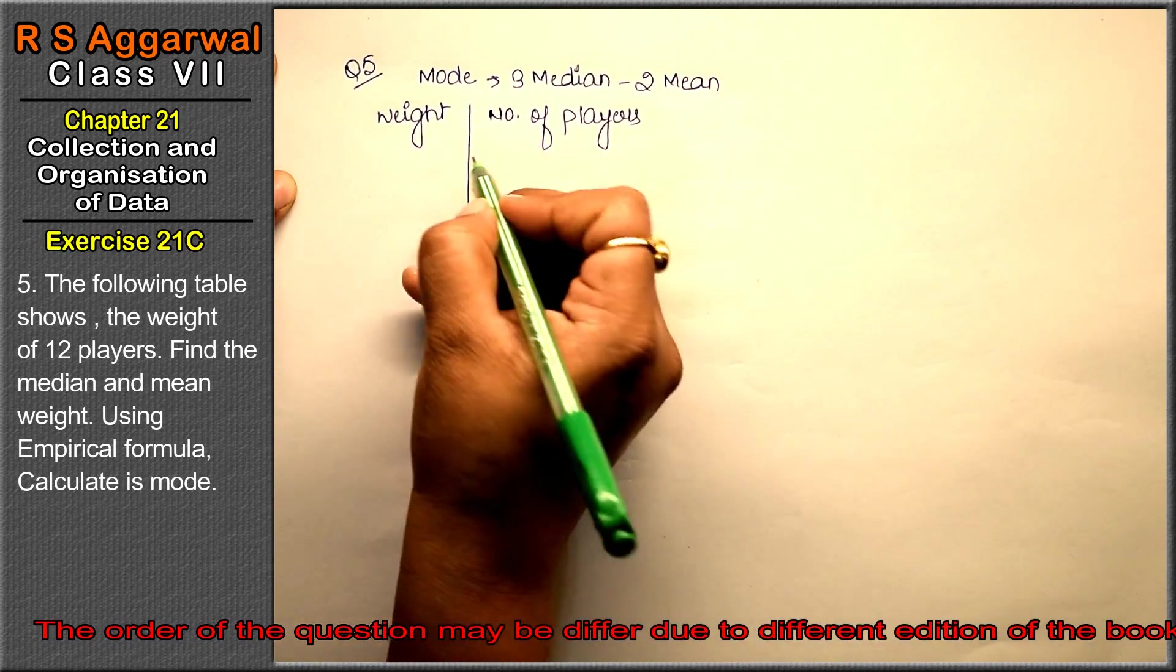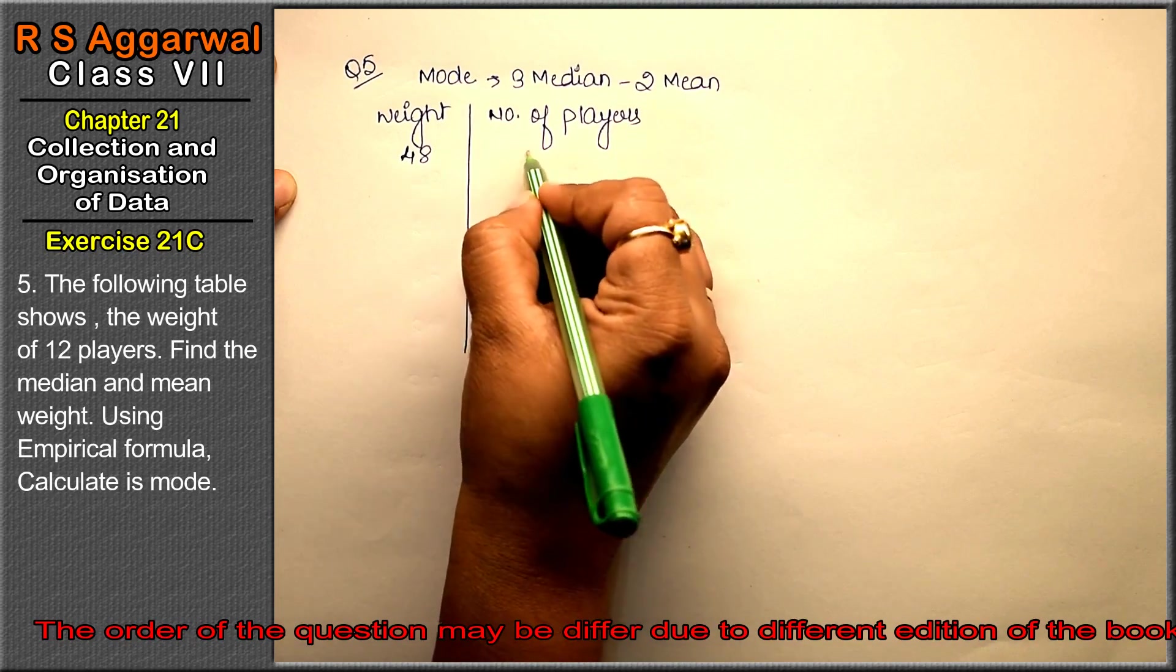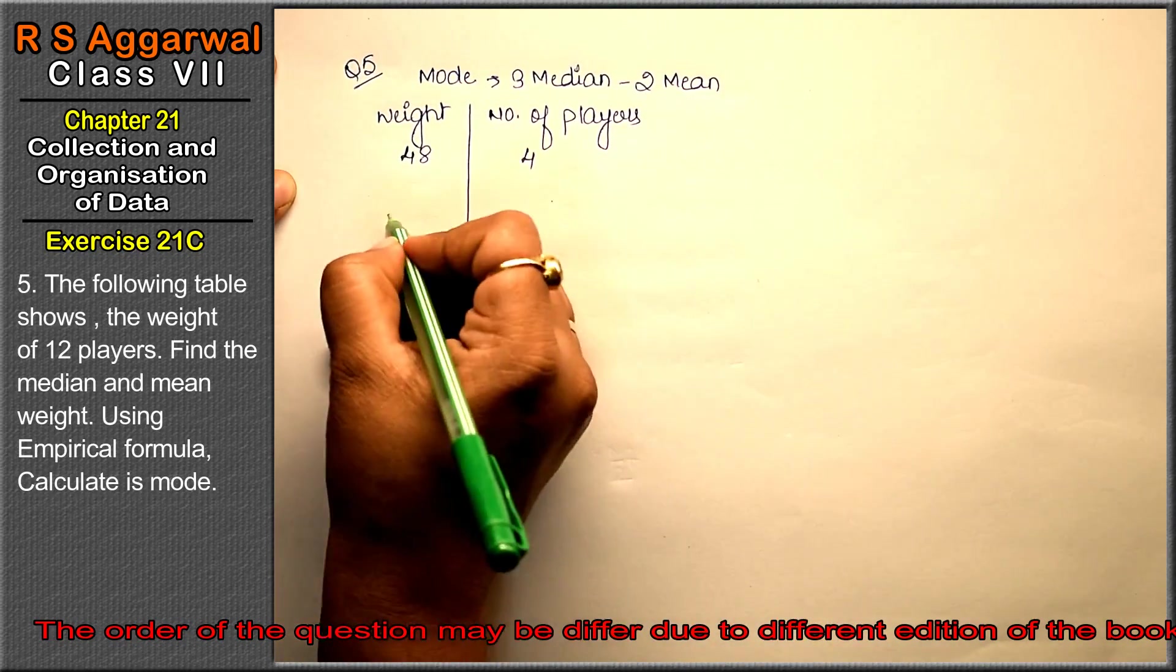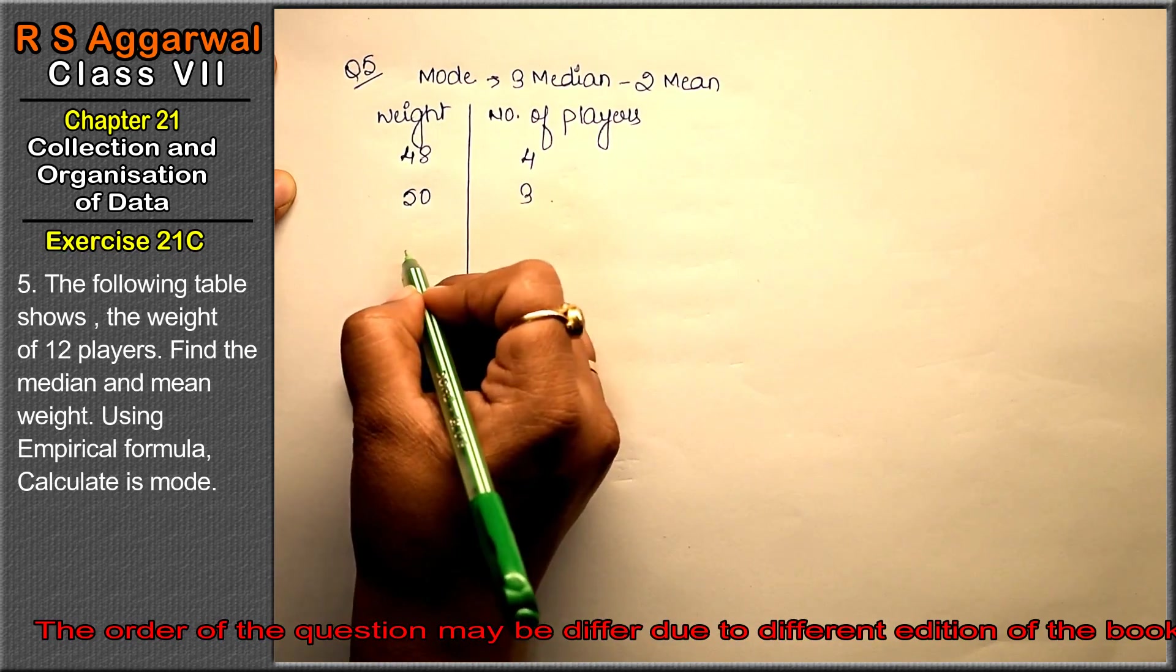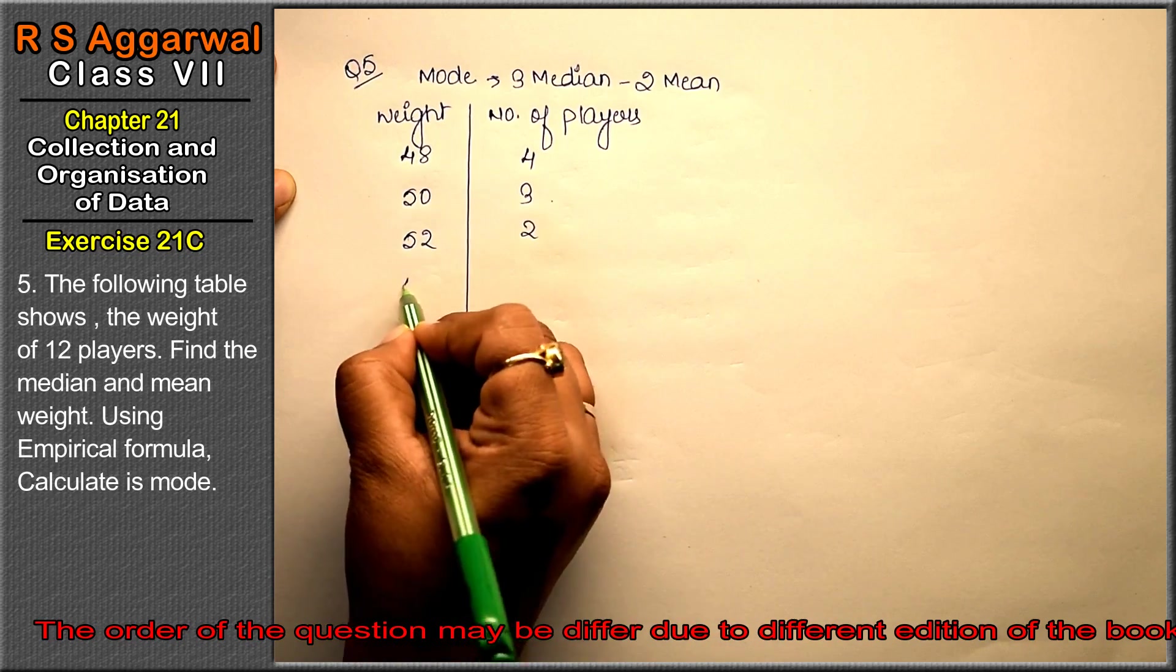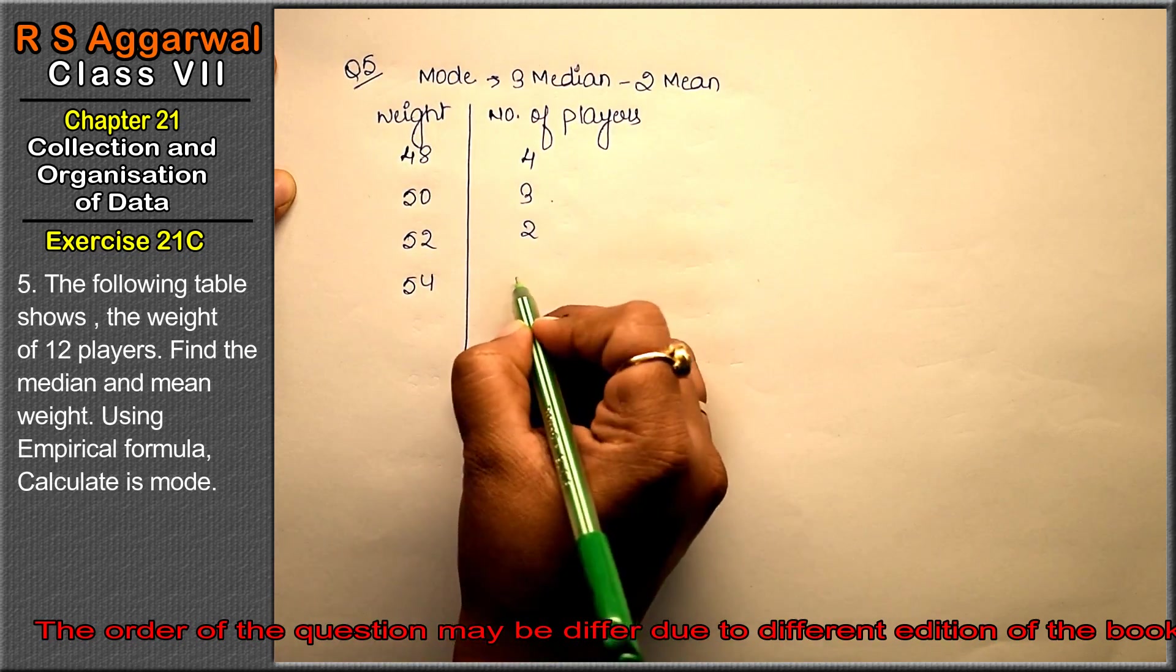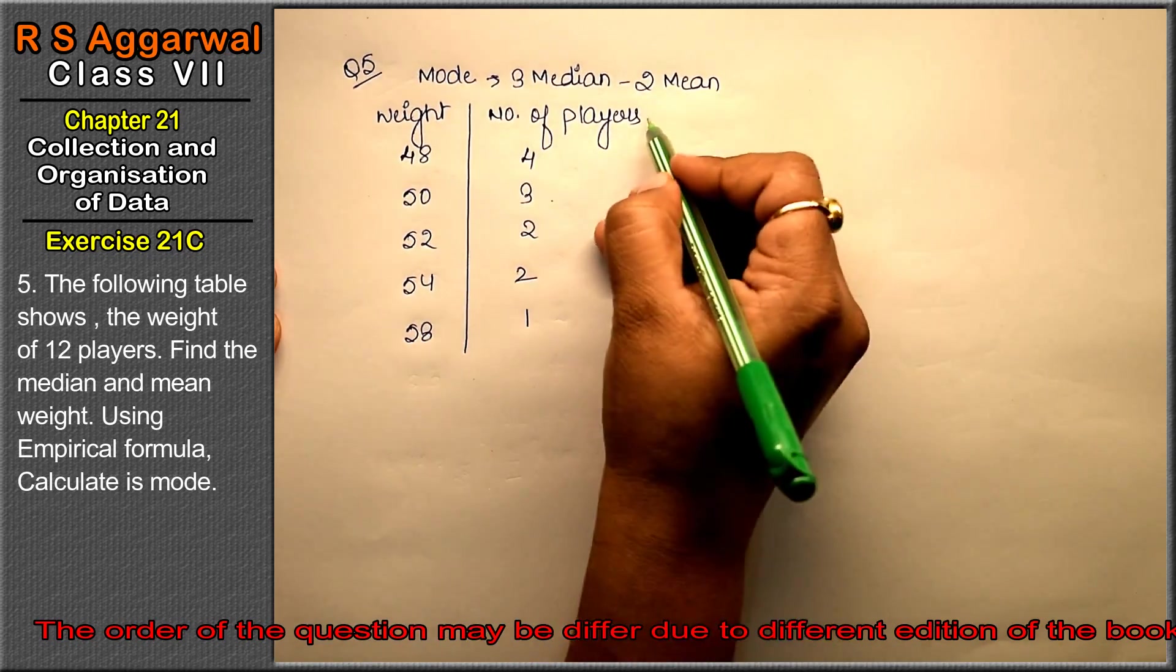The weight of 48 kg is 4 persons, 50 kg is 3 players, 52 kg is 2 players, 54 kg is 2 players, and 58 kg weight is 1 player.